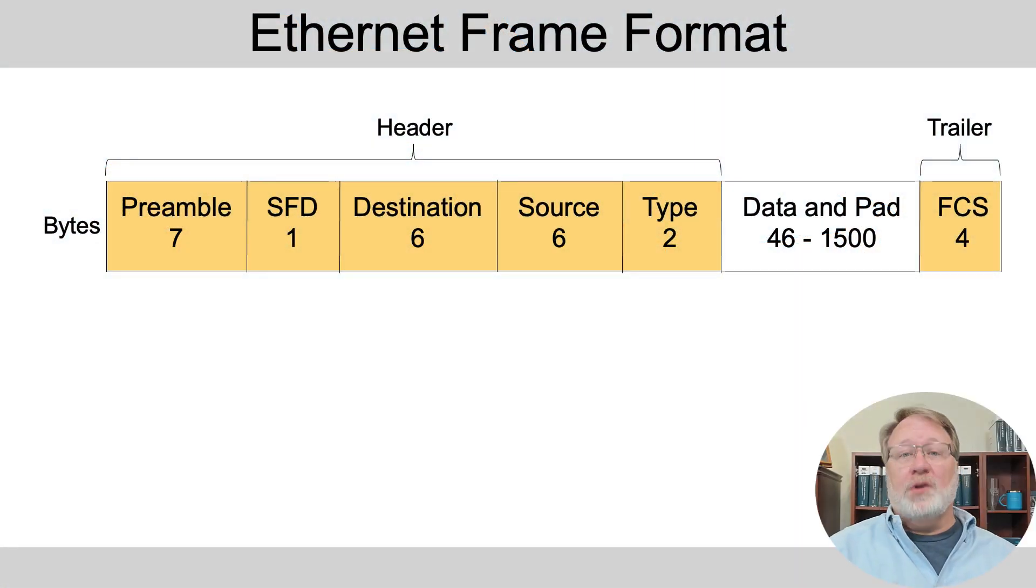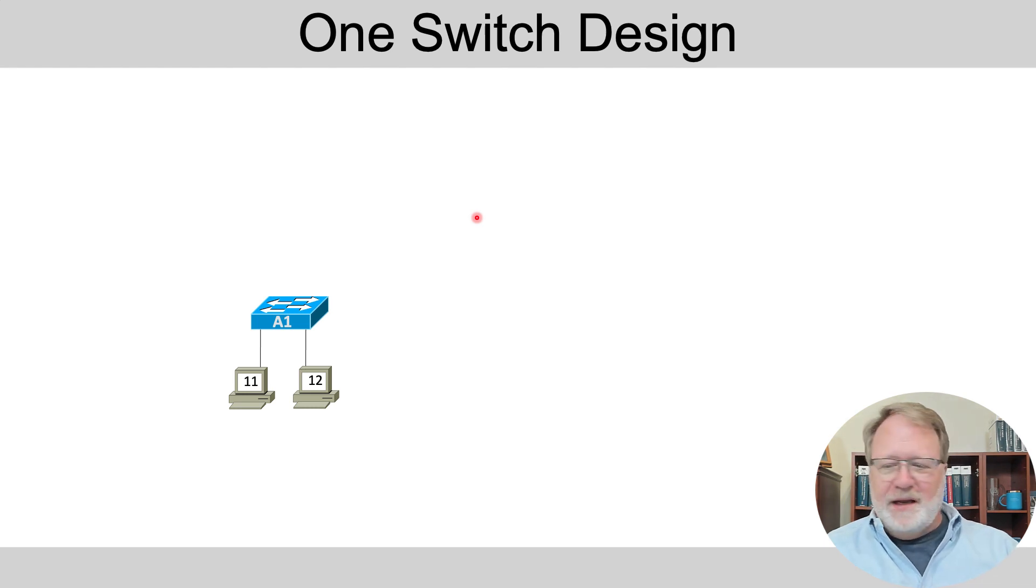Now let's talk about what flows over those physical links. Ethernet defines both layer one details and layer two details from the TCP IP model. At layer two, it defines this frame format that you see on the screen now. That includes the header on the left and the trailer on the right. And then what you'll find in that data and pad would be, for instance, an IP packet. Most importantly in there are this destination and source address fields. So when two devices on an Ethernet LAN want to communicate, the sender uses its address as the source and it puts the destination that it wants to receive this data in as the destination address.